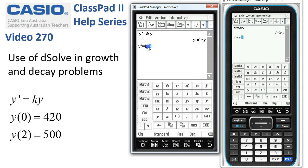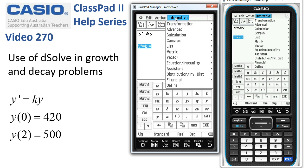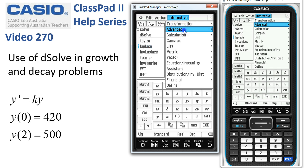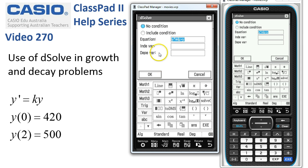Now we'll take a copy to a new line and I'm going to select it and head off to the interactive menu, interactive advanced, and here it is D solve for solving differential equations and we're going to include a condition on this.